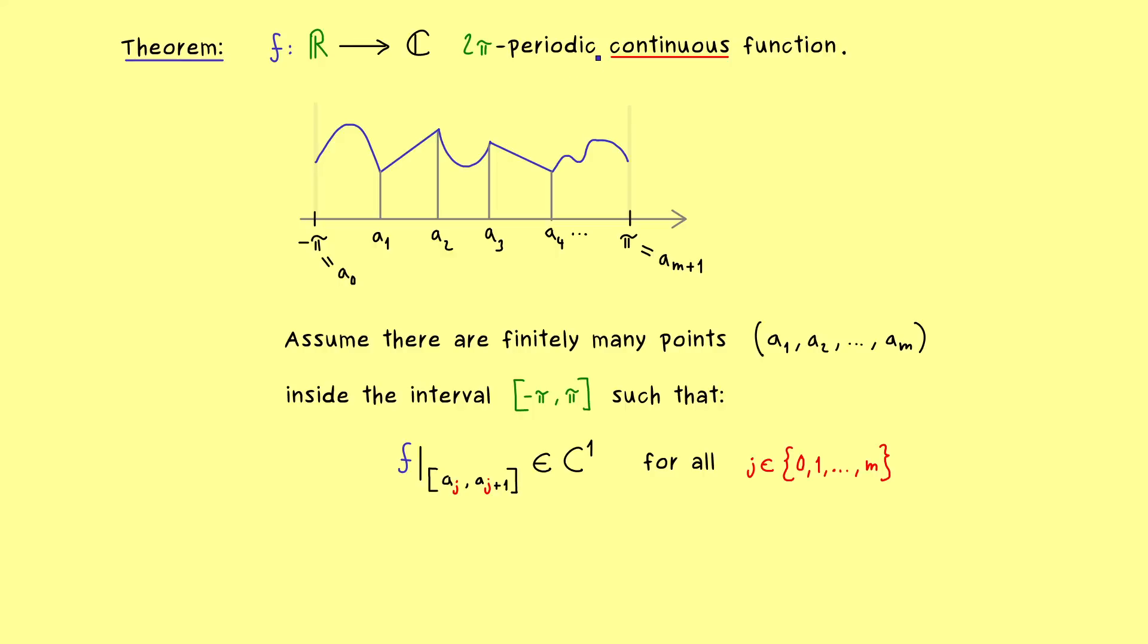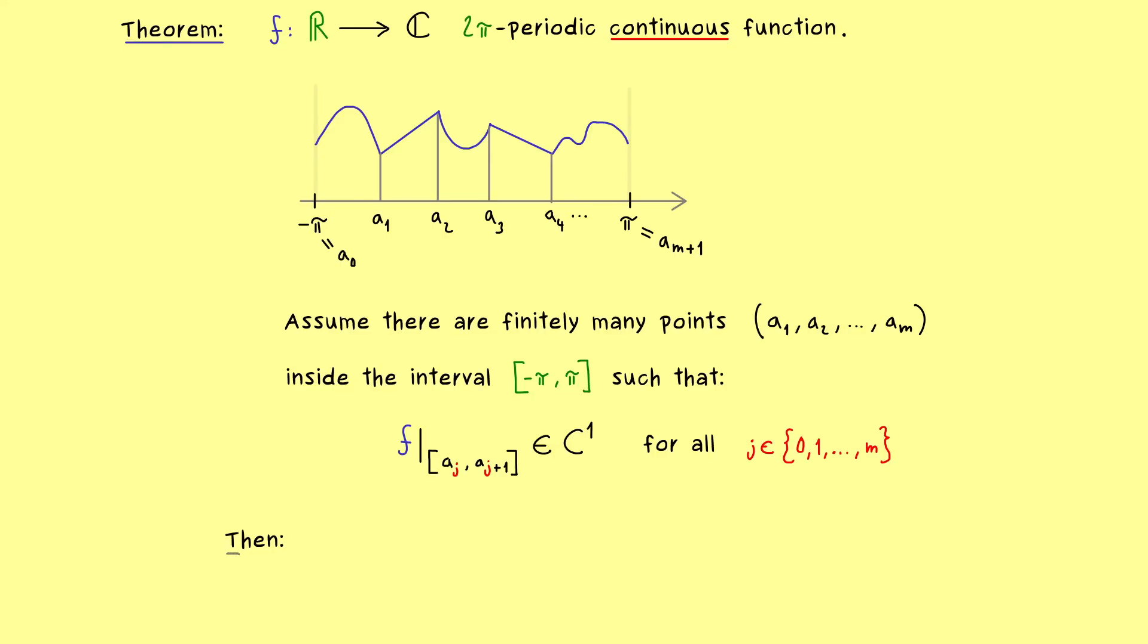Which means we have a continuous function, which also includes that the values at minus π and π coincide, and moreover the function should be piecewise continuously differentiable. Then what we get is that we have uniform convergence of the Fourier series to the original function f. As you already know this can be written with respect to the supremum norm. So we consider f minus the Fourier series of f and then we send n to infinity, and then the claim is that the supremum norm goes to 0.